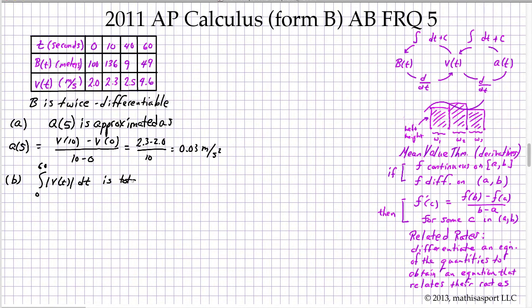That theorem is certainly satisfied. Namely, we have a continuous function on a closed interval. Now, why do we know that the velocity is continuous? Because they told us that B is twice differentiable. So, we know that the derivative of B with respect to time exists, and that's velocity. But since it's twice differentiable, we also know that the derivative of the velocity with respect to time exists. And so that guarantees the continuity of the velocity. So, we know that the intermediate value theorem can be applied.